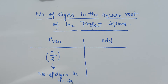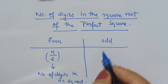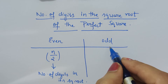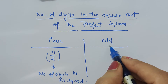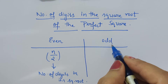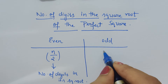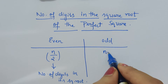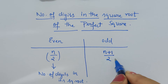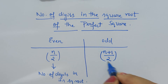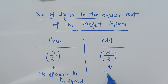Now let's take the other case: if the number of digits in the given perfect square is odd — like 121, which is a perfect square and has an odd number of digits, three — then what we have to do is use the formula (n + 1) / 2, and this gives the number of digits in its square root.